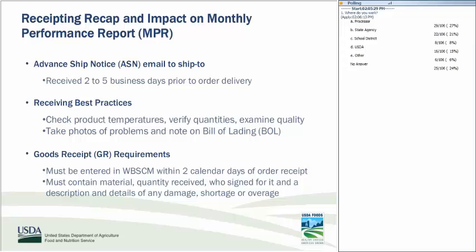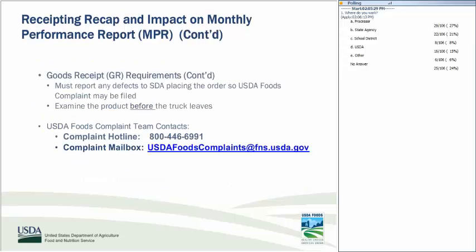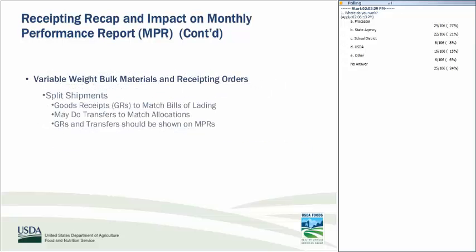Once the sales order is received, the goods receipt must be entered in WebSCM within two calendar days of receipt by the state, receiving warehouse, or processor. The goods receipt should provide details on what was received, when, how, who signed for it, whether there was any damage, shortage, or overage, and a description of any damage. Defective materials should be reported to the state distributing agency so that a USDA Foods complaint may be started in WebSCM. It is important that delivered product is examined prior to signing the bill of lading and releasing the truck.